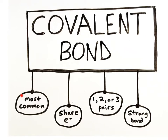Covalent bonds are the most common type of chemical bond found in the body and hold together most of the body's chemical molecules. Covalent bonds form when pairs of valence electrons, the electrons in the outermost shell of an atom, are shared between two or more atoms. The atoms can be of the same or different elements.